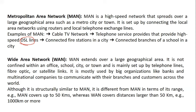Wide Area Network, WAN, extends to a very large geographical area — not confined to offices or towns. It is set up by telephone lines, fiber optic, and satellite links. It is mostly used by large organizations and multinationals to communicate with branches and customers across the world. MAN can cover at most 50 kilometers whereas WAN can cover more than 50 kilometers — up to 1000 kilometers or more.